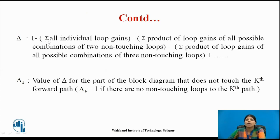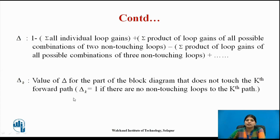Here, k is the number of forward paths and Pk is the gain of the kth forward path. Δ equals 1 minus the sum of all individual loop gains, plus the sum of products of loop gains of all possible combinations of two non-touching loops, minus combinations of three non-touching loops, and so on with alternating signs. Δk is the value of Δ for the part of the block diagram that does not touch the kth forward path. If there are no non-touching loops to the kth path, then Δk equals 1.